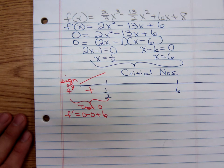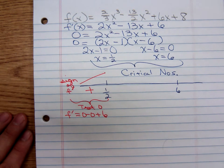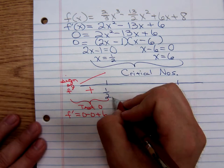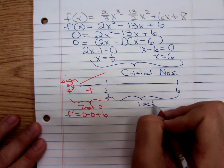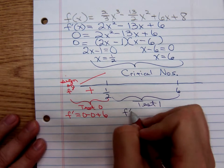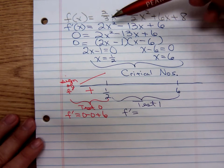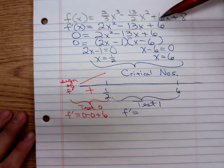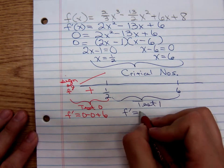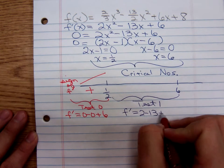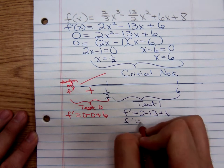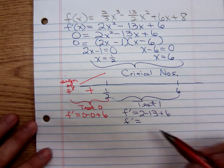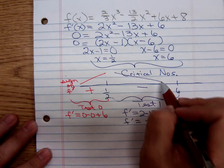From one-half to six, what do you want to test? One, that's an easy number to plug in. That'll give me - plugging it into the derivative - two minus thirteen plus six. Positive or negative? The exact value doesn't matter, just positive or negative. Negative. That means the function is decreasing.